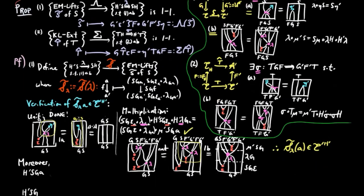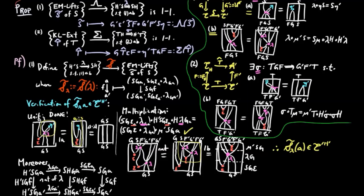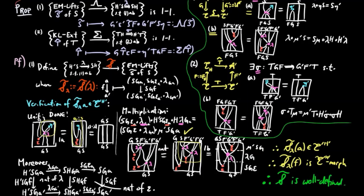Moreover, it is easy to see that the assignment on morphisms is well-defined by the naturality of λ and the counit ε. Also note that by definition, G'·S̃(λ) equals SG, showing that S̃(λ) is an Eilenberg-Moore lift of S.